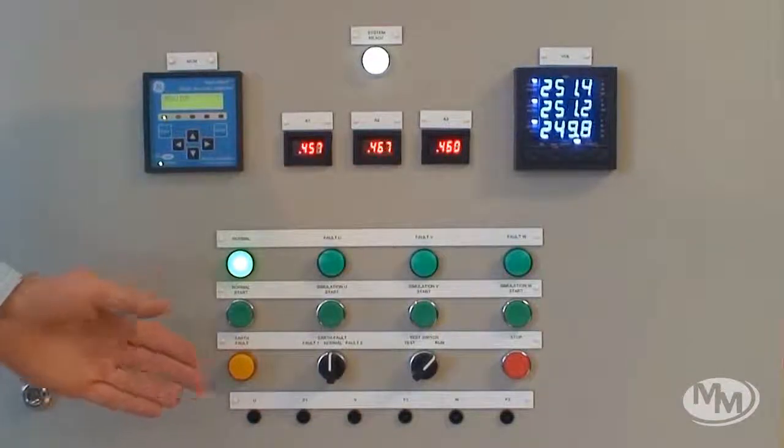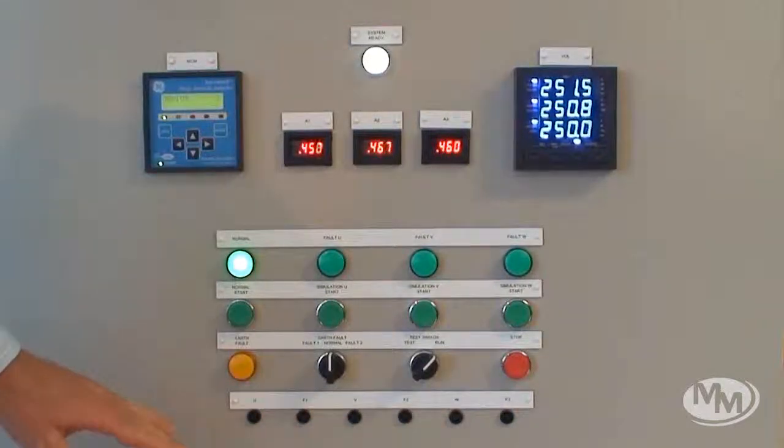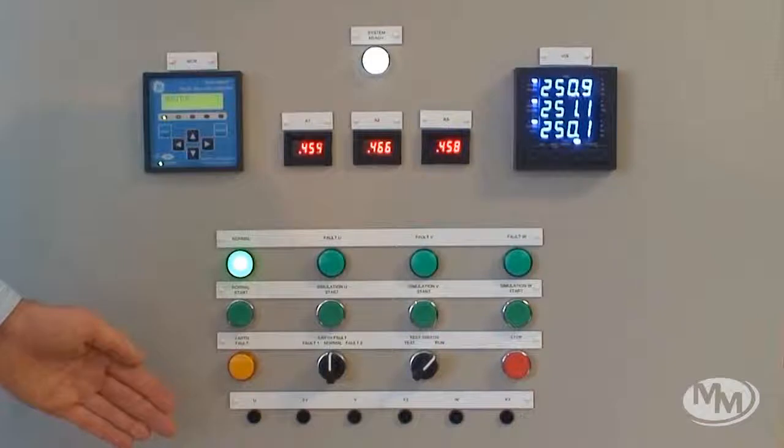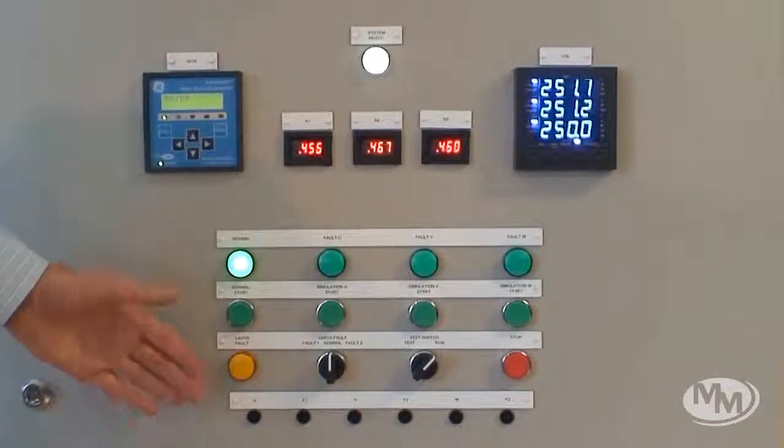The test points at the bottom of the cabinet are used for connecting external measurement equipment so that the faults and their nature can be independently monitored with test instruments and the outputs from the Anomalert verified.